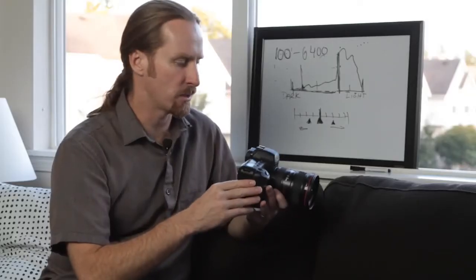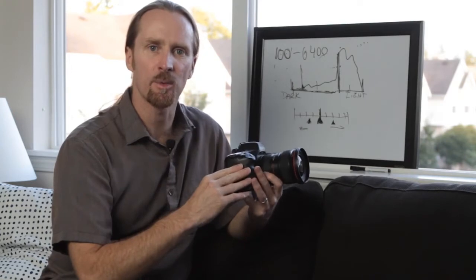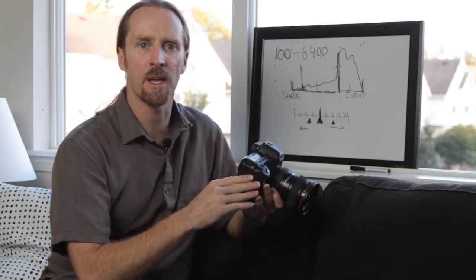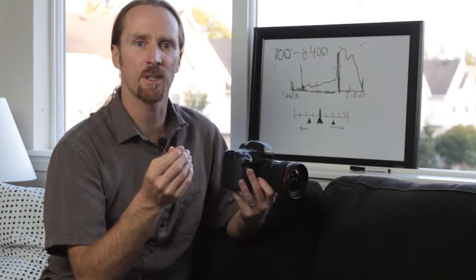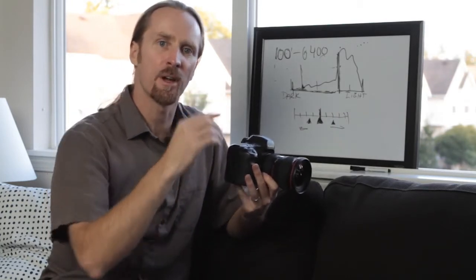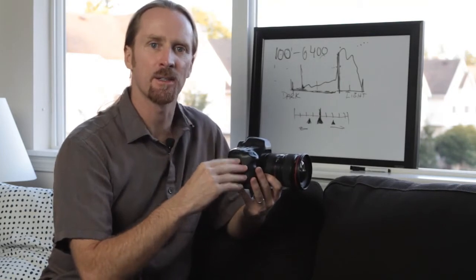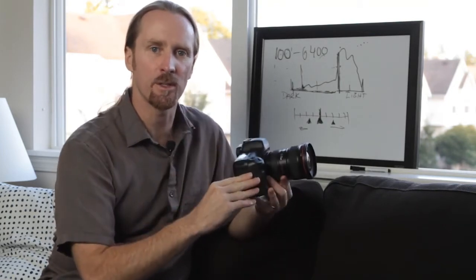So a lot of cameras, even the older ones, will have it as an option to preview images and see the histogram. But in the newer models with the live view display, you can actually get a histogram view and see what exposure you're going to take before you take the photograph.